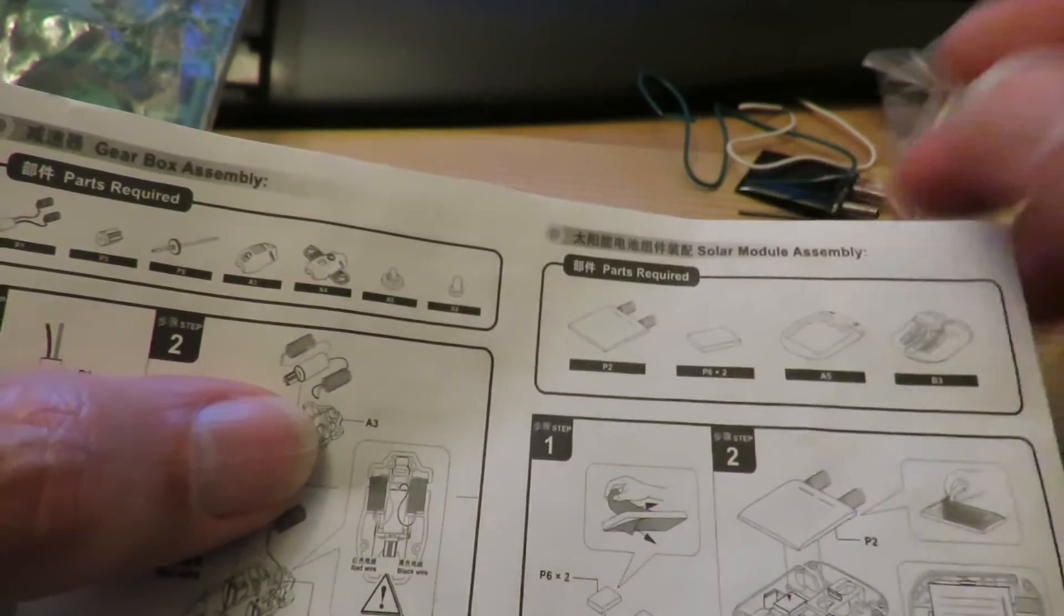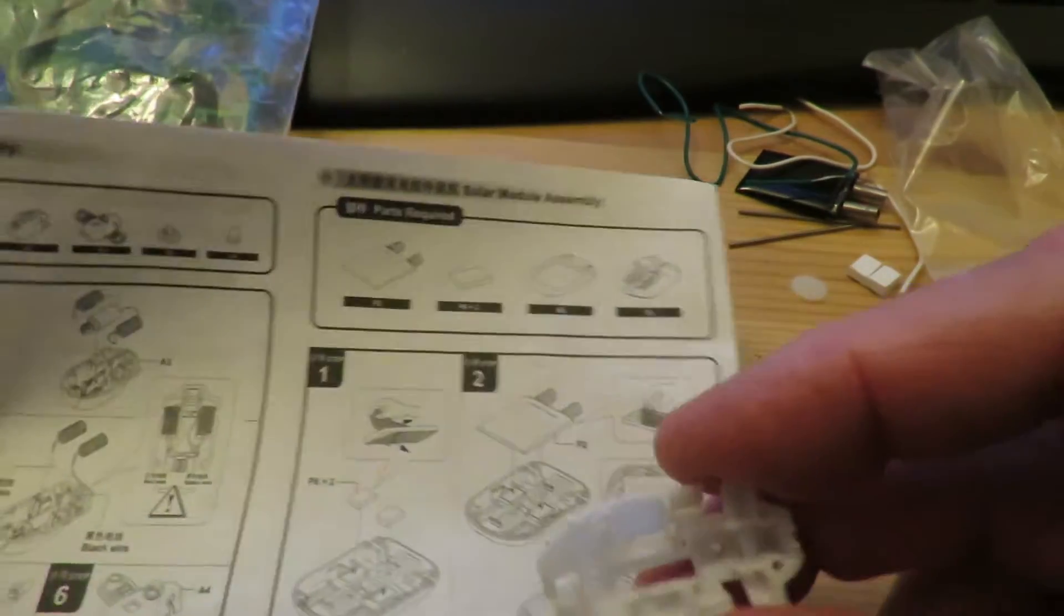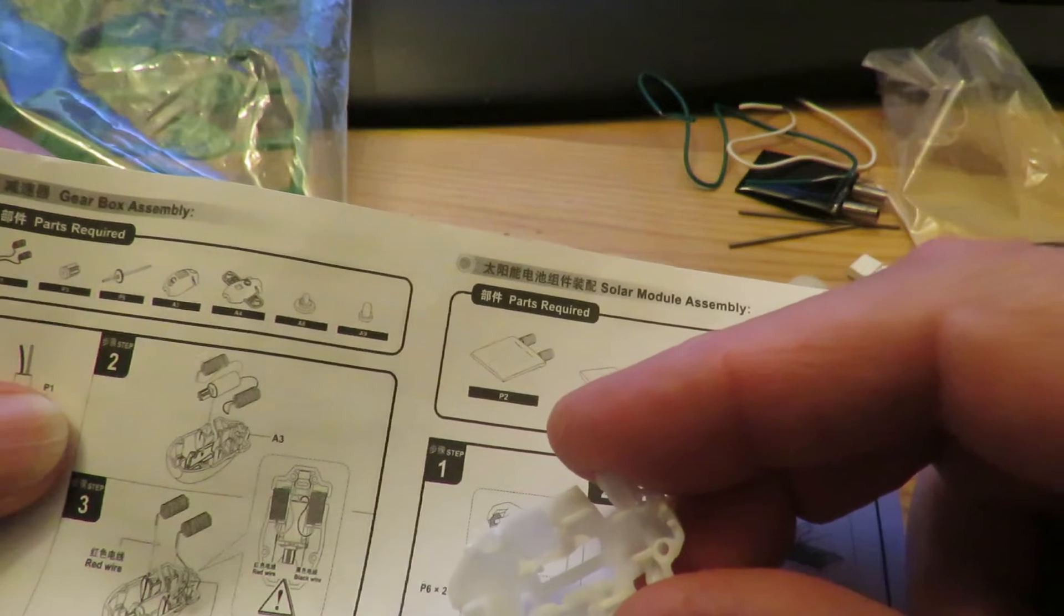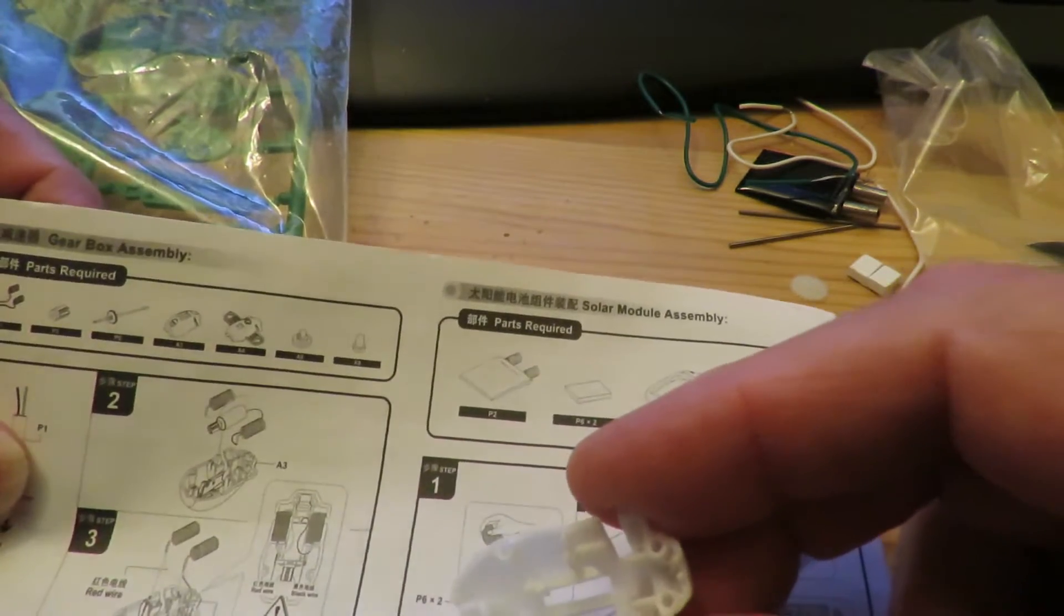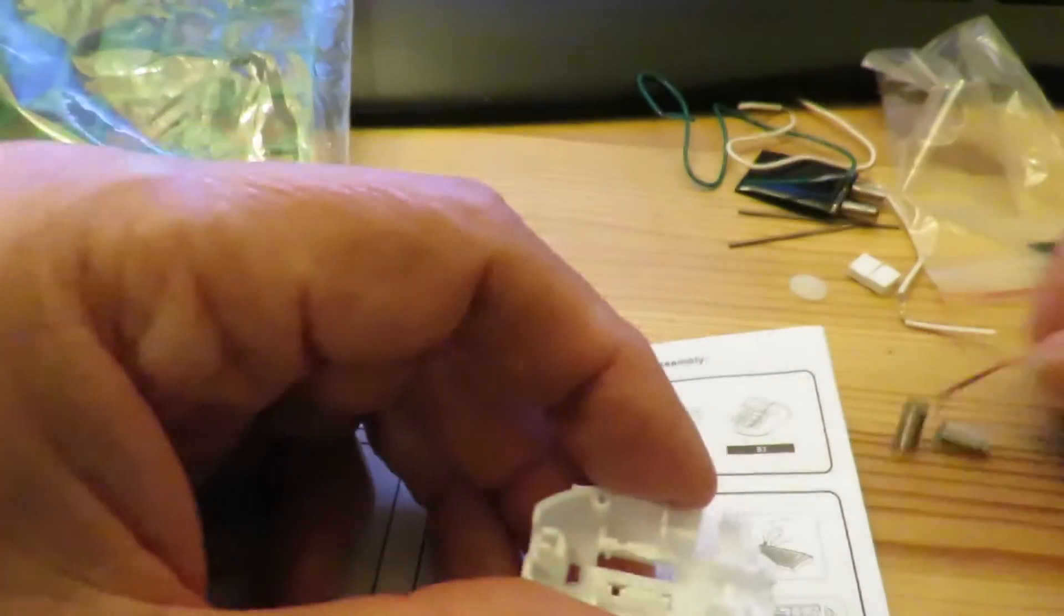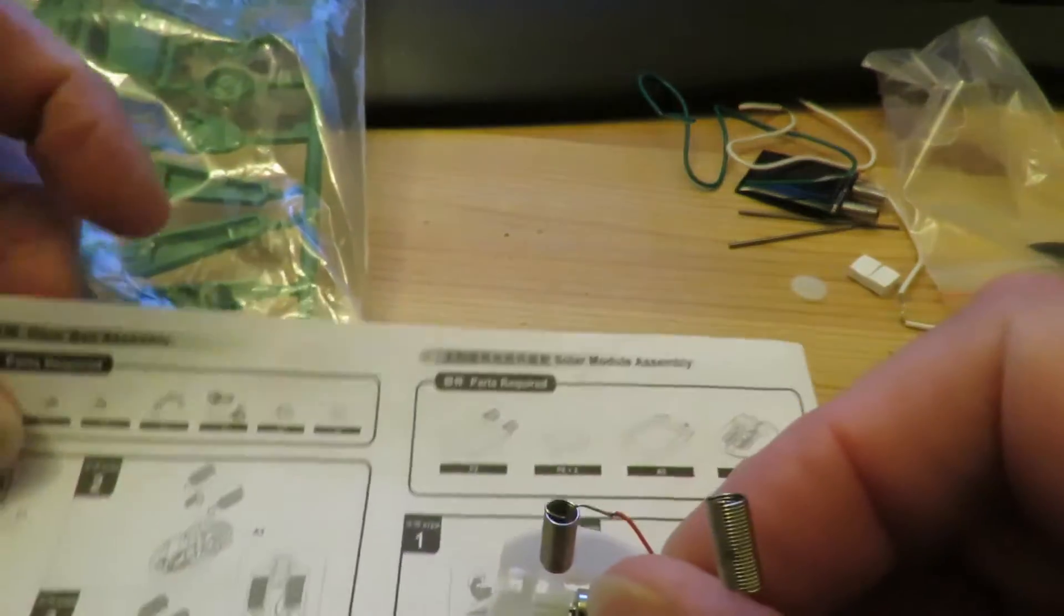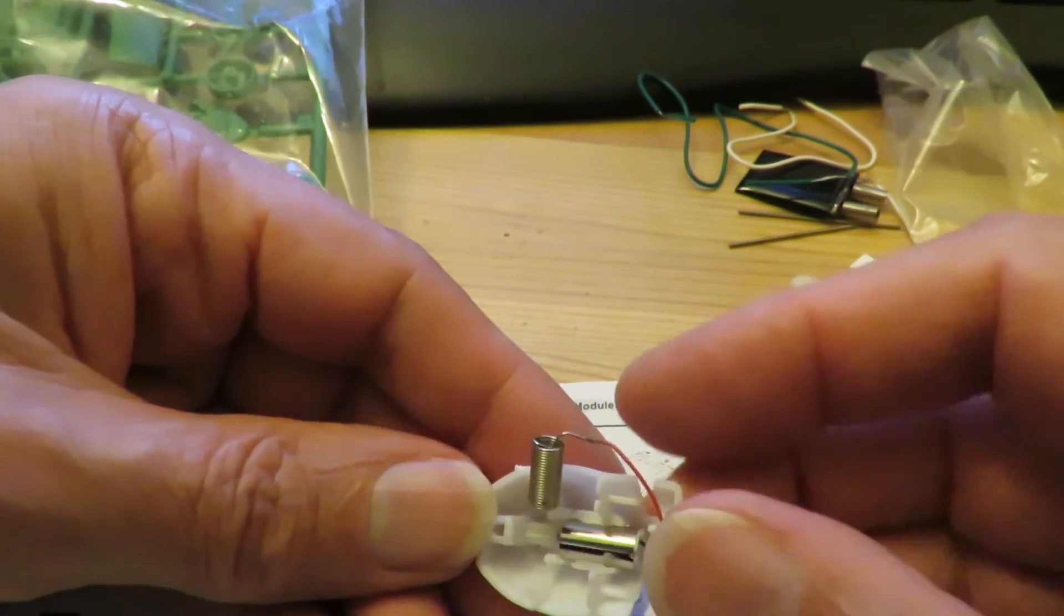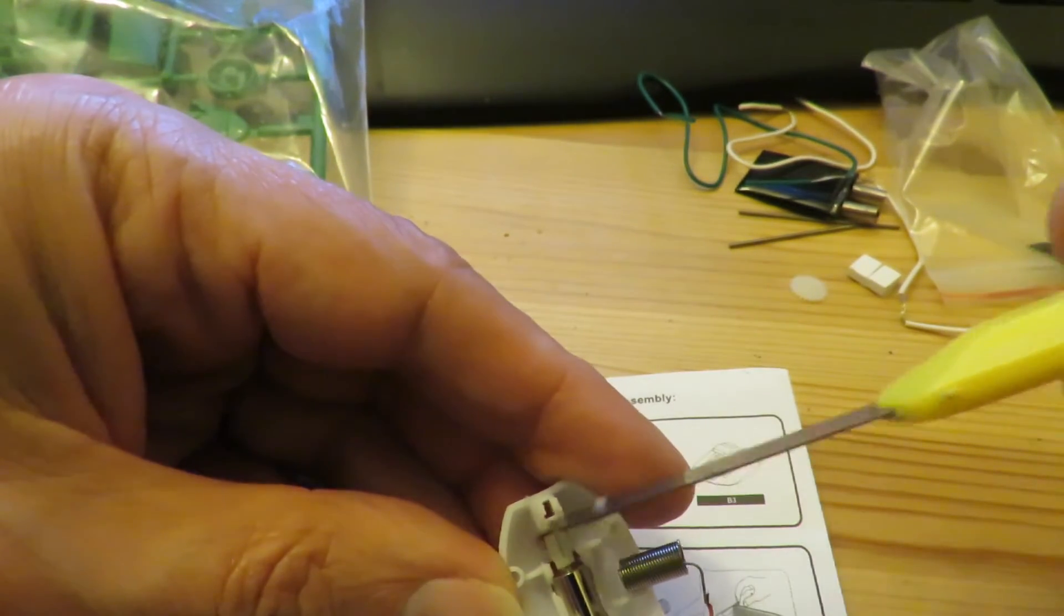Next thing, we need part A3. Which is this piece. And looking at the picture, get it the right way round. Motor's going to go down into there. And then those springy bits go up here. Right, that's in there. You need to make sure that it's not jamming on the end there. Mine's okay.